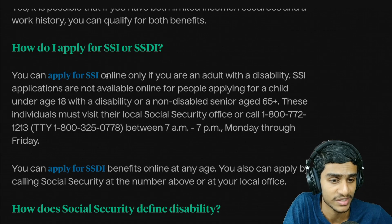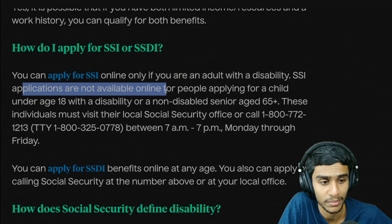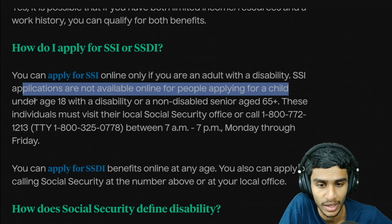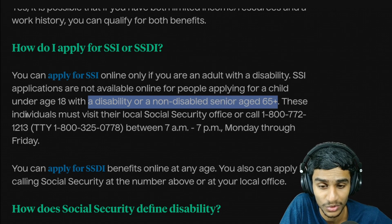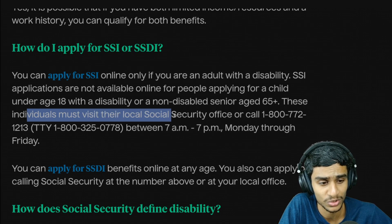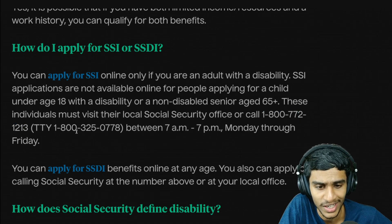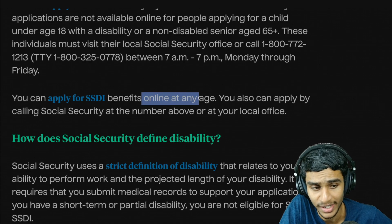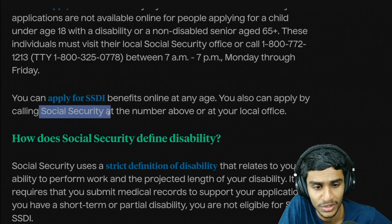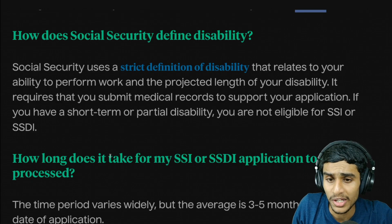To apply for SSI: adults with a disability can apply online. SSI applications are not available online for a child under age 18 with a disability or a non-disabled senior age 65 or older — those individuals must visit their local Social Security office or call 1-800-772-1213 or 1-800-325-0778. For SSDI, you can apply online at any age, by calling Social Security at those same numbers, or by visiting your local office.